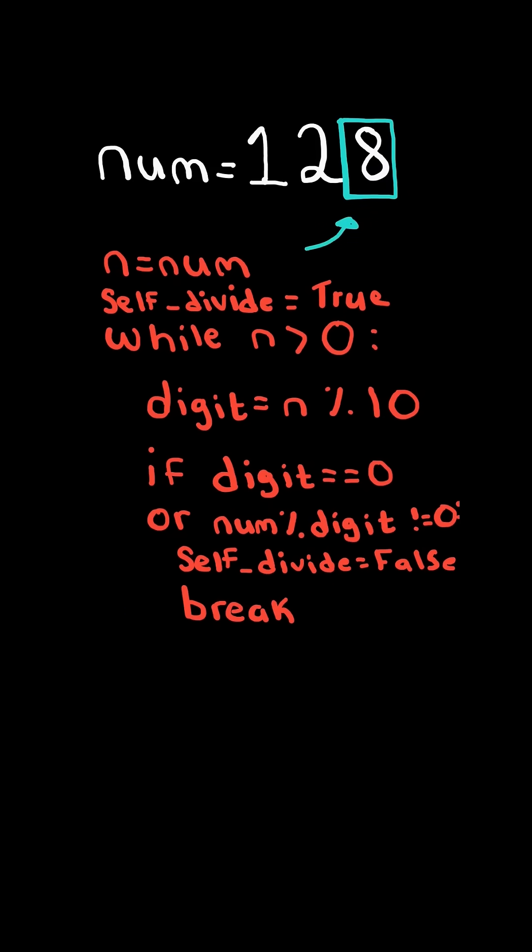In this case, the digit does divide the number. So we divide n by 10 to remove the last digit and continue checking the next.